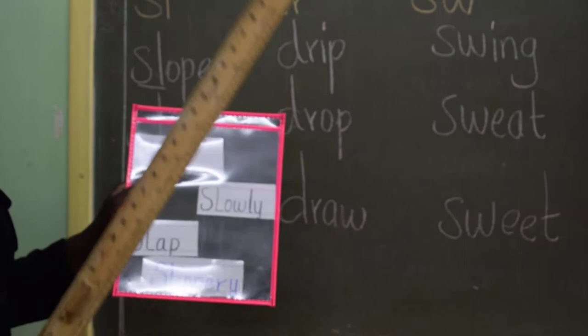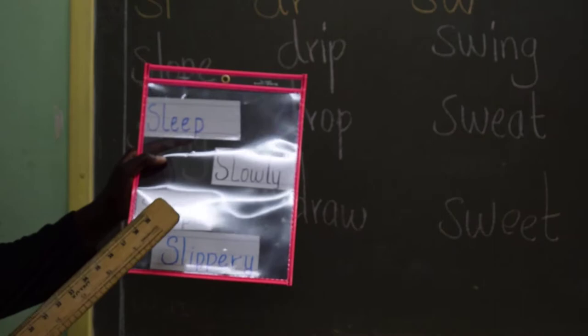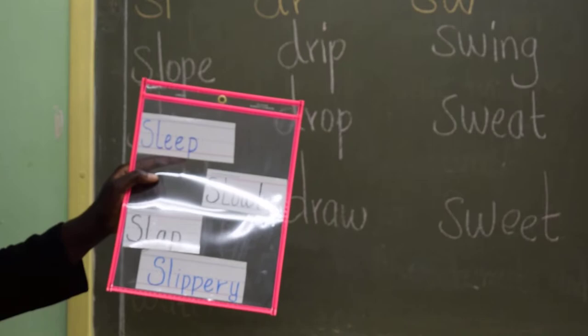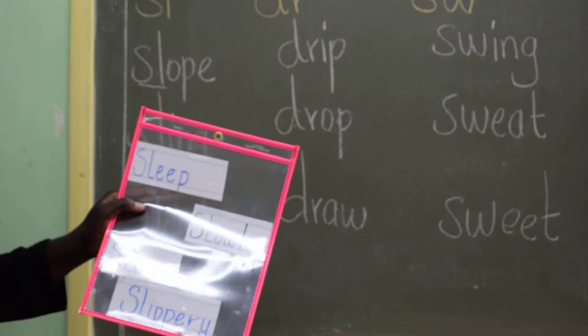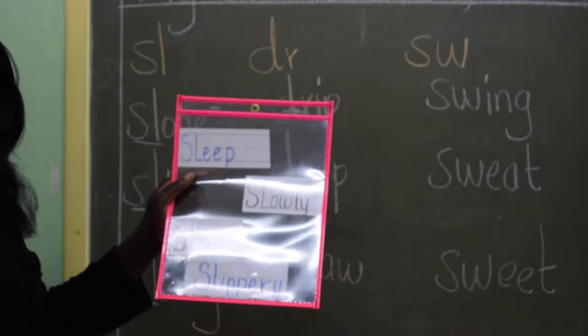Slap. This is for bad children — don't slap people. Slap is when you use your fingers to hit somebody, but it's not good for you children. Don't slap people. Slippery is when the place is not firm enough for you to stand — you will slide. That means the surface is slippery.